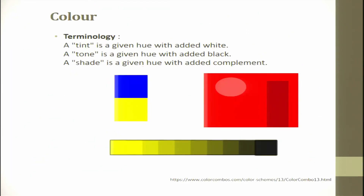Now let us discuss color in more depth. There are three terminologies: tint is a given hue with white added to it; tone is a given hue with black added; and shade is a given hue with added complement. These are the common terminologies used in color.